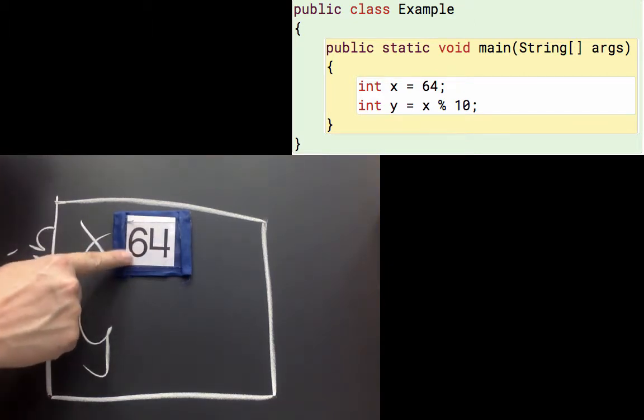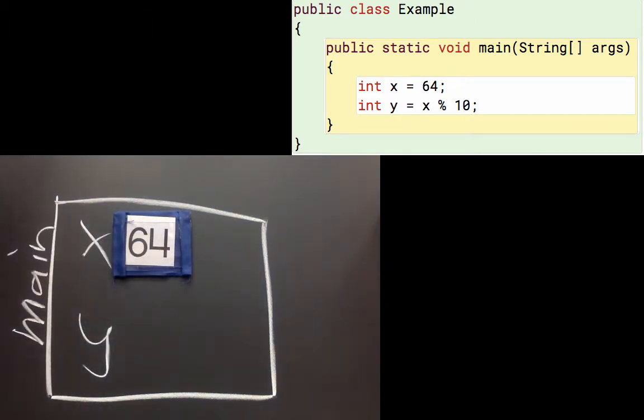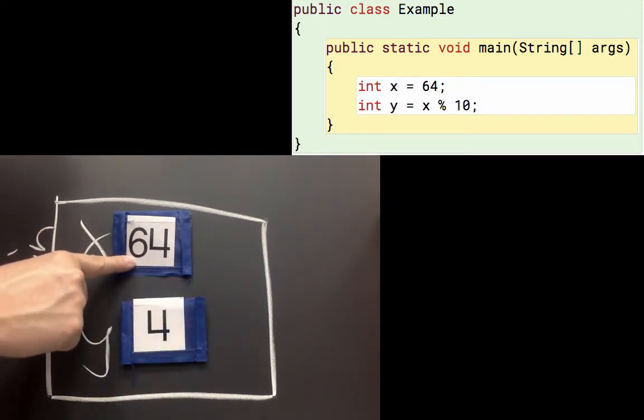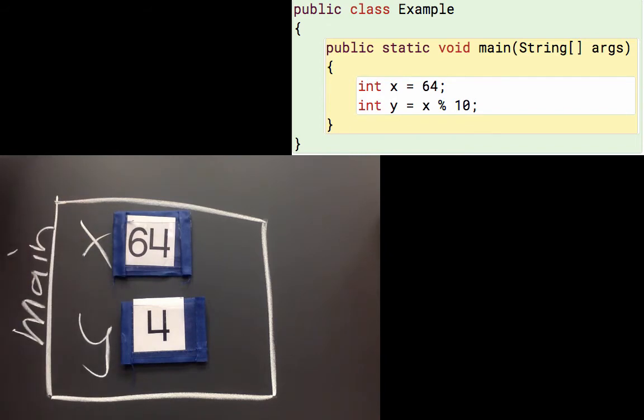So what's the remainder? If you divide 64 by 10, we get 4. So y will have the value 4, because that's the remainder when we divide x, that's 64, by 10. Our remainder is 4, so the mod is 4.